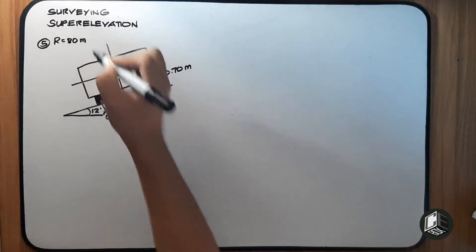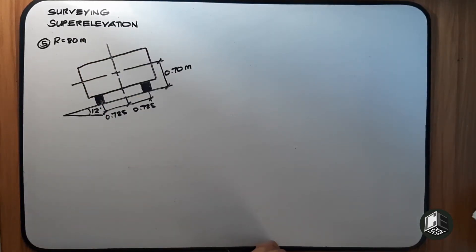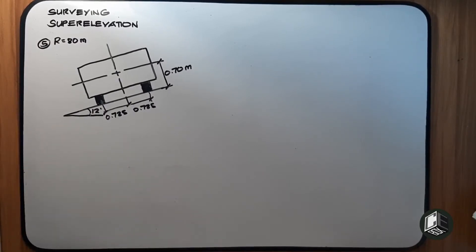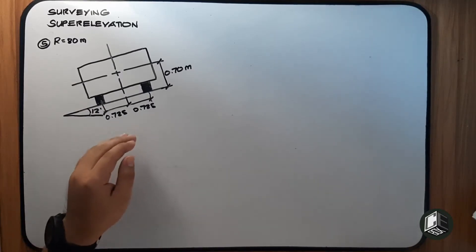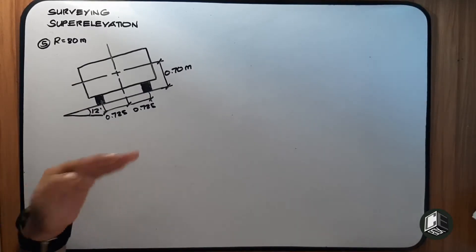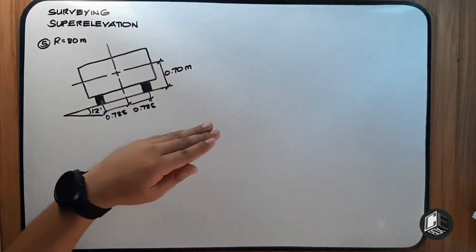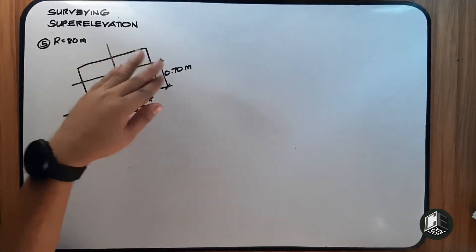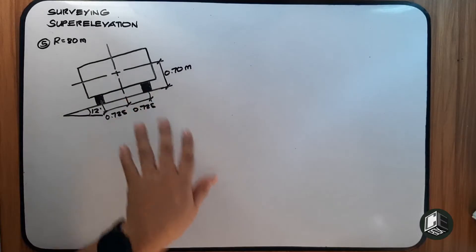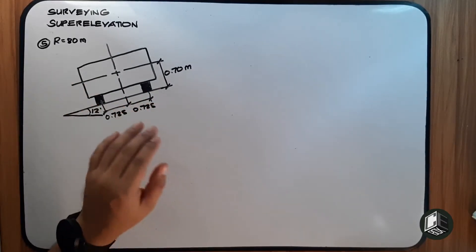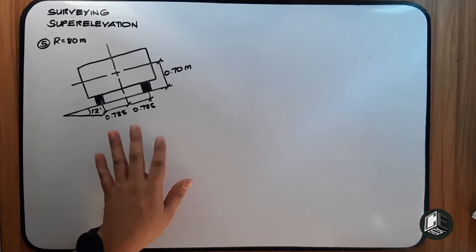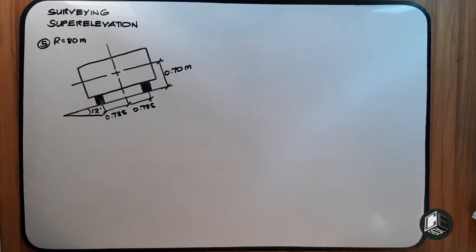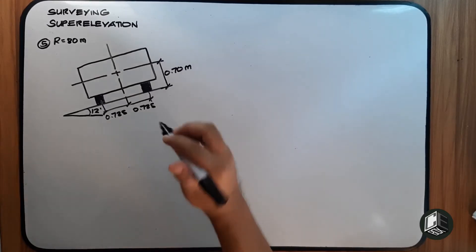The radius is 80 meters, and we need to determine the speed v. Since the problem states friction is sufficient to prevent skidding — meaning the roughness of the road is just right — the vehicle won't slide. However, there is still a possibility of overturning. So we need to find the speed at which the vehicle is about to overturn on this highway curve.